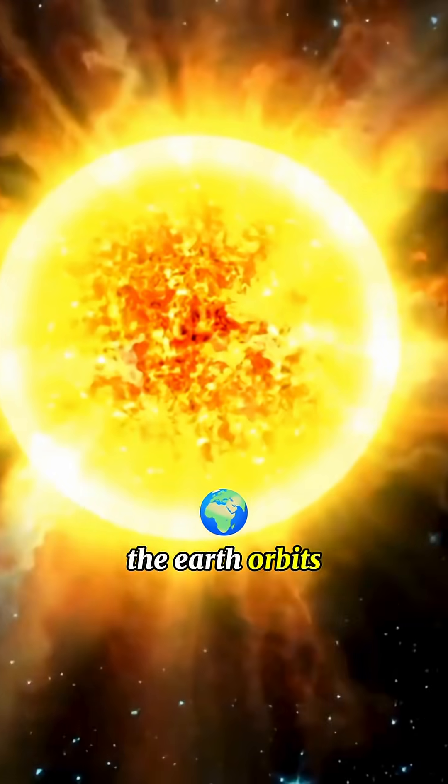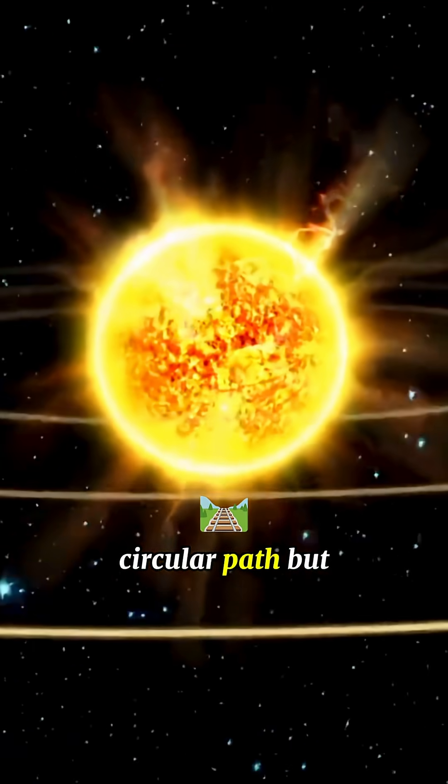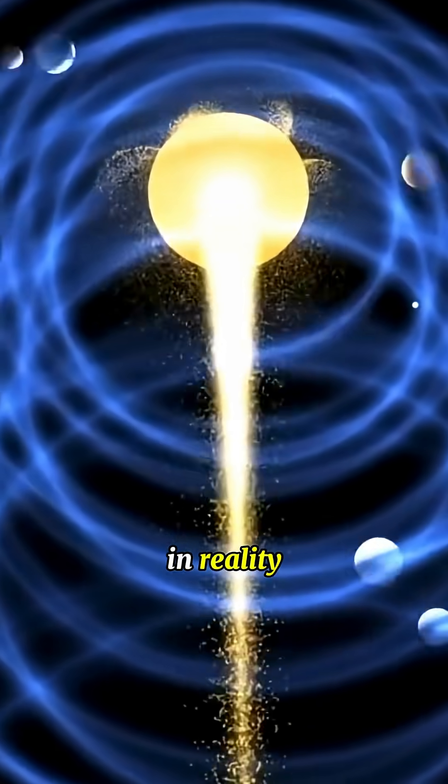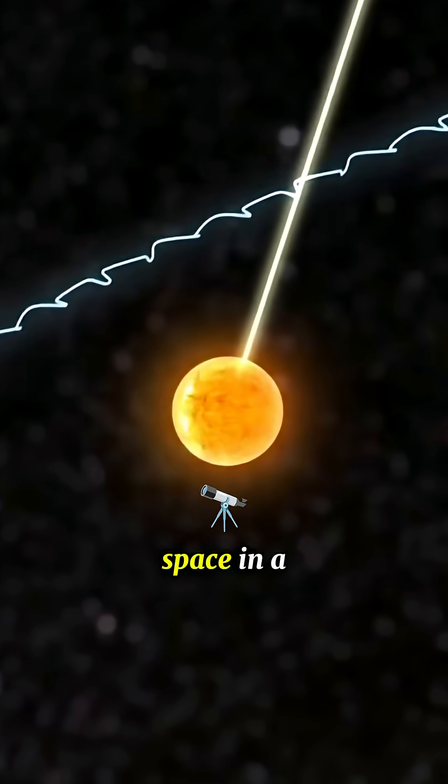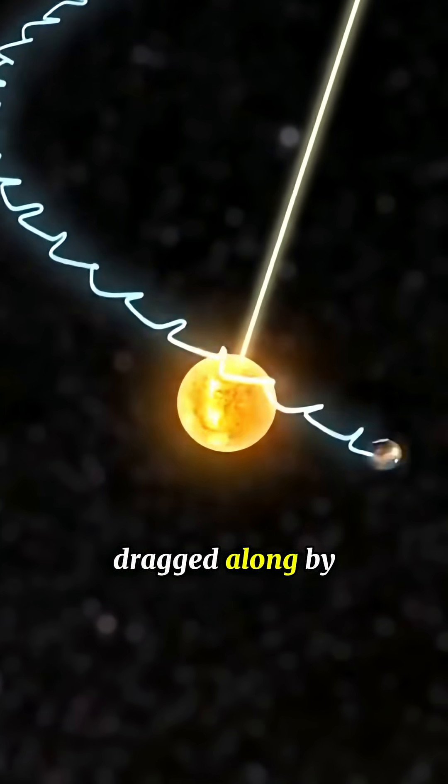Most people think the Earth orbits the sun in a nice circular path, but that's completely wrong. In reality, we're spiraling through space in a corkscrew motion, dragged along by the sun.